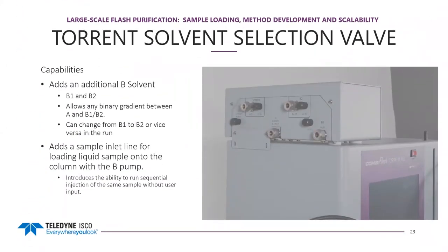The Torrent solvent selection valve not only allows automatic loading but also adds an additional B solvent. Instead of one B solvent, you now have B1 and B2. Any binary gradient can be formed between A and either B1 or B2, and you can switch from B1 to B2 mid-run. This allows a wash step at the end of the run with a stronger solvent to maintain the column. Additionally, it adds a third line — the sample inlet line for loading liquid sample onto the column — using the B pump to do this.